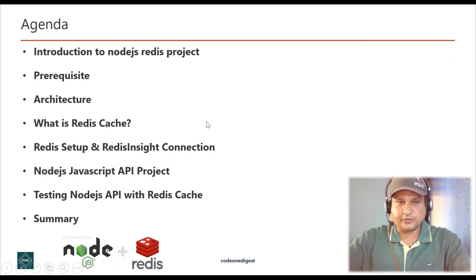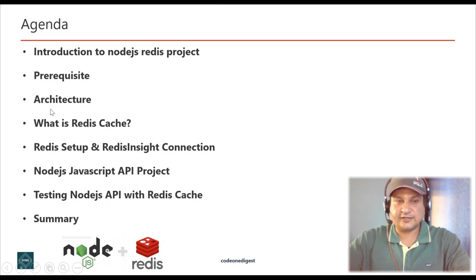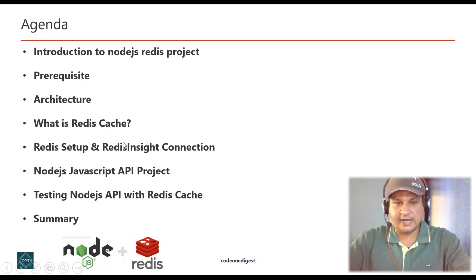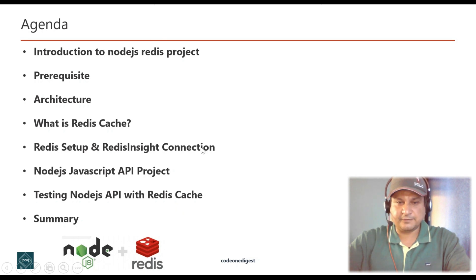Here is the agenda of this tutorial. I will explain what this project is about, give a brief about the Node.js Redis project, cover prerequisites, software and dependencies, then explain the architecture of this project — how Node.js connects to Redis cache. I'll explain what Redis cache is, how to set it up, show the Node.js API project setup, the coding, testing, and finally summarize what we learned.